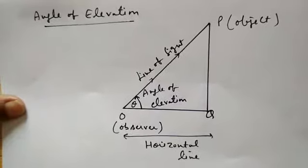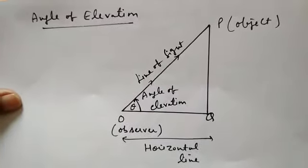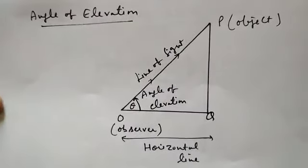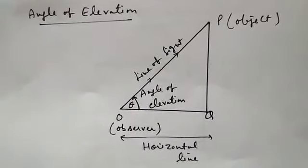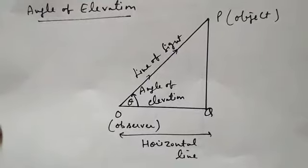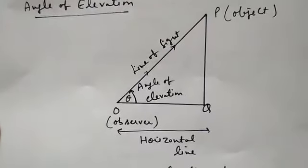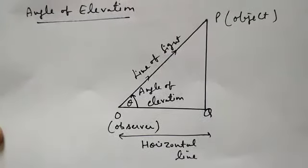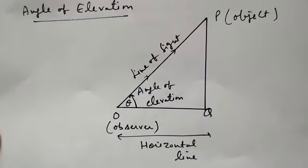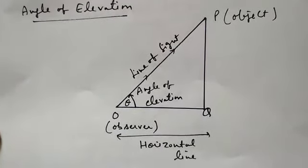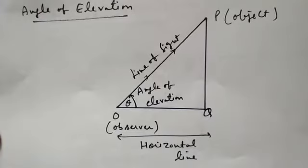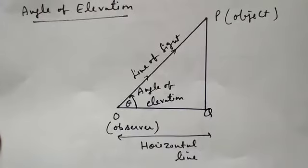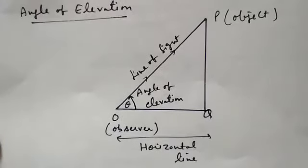So using the Trigonometric ratios, we can find the height of any unknown object. Now we will read some terms. First of all, we have the angle of elevation.